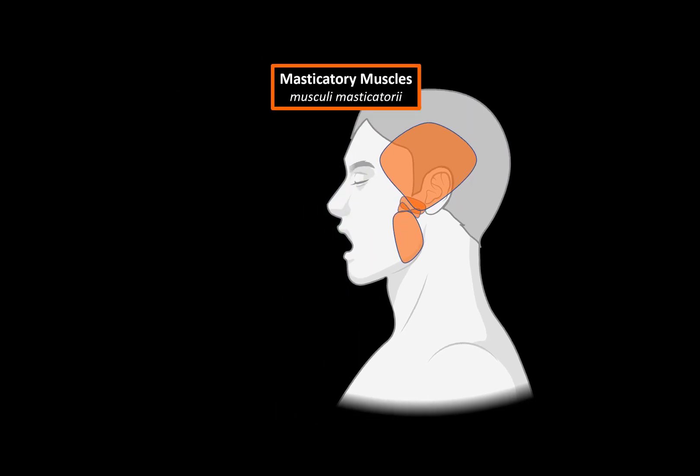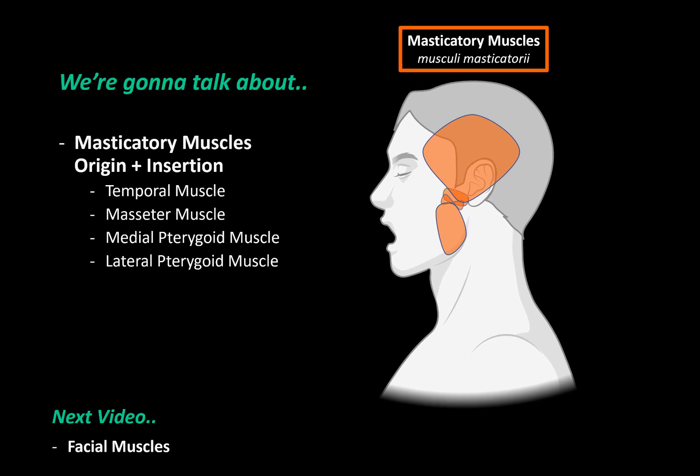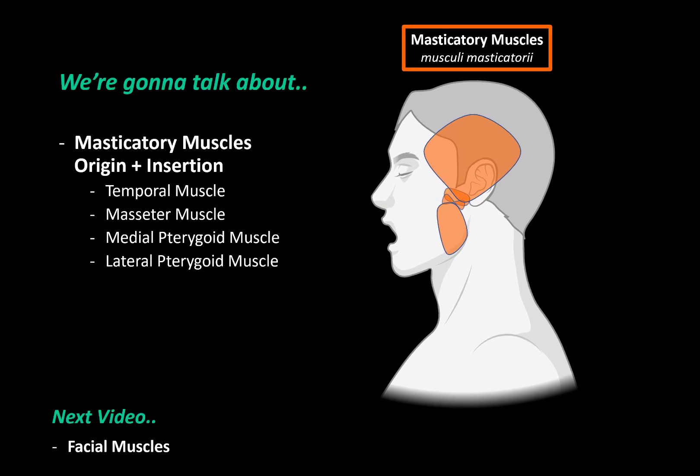In this video, we're going to cover the origin and the insertion point of the four muscles of mastication, which are the temporal, masseter, medial pterygoid, and the lateral pterygoid muscles. And then in the next video, we'll cover the facial muscles.